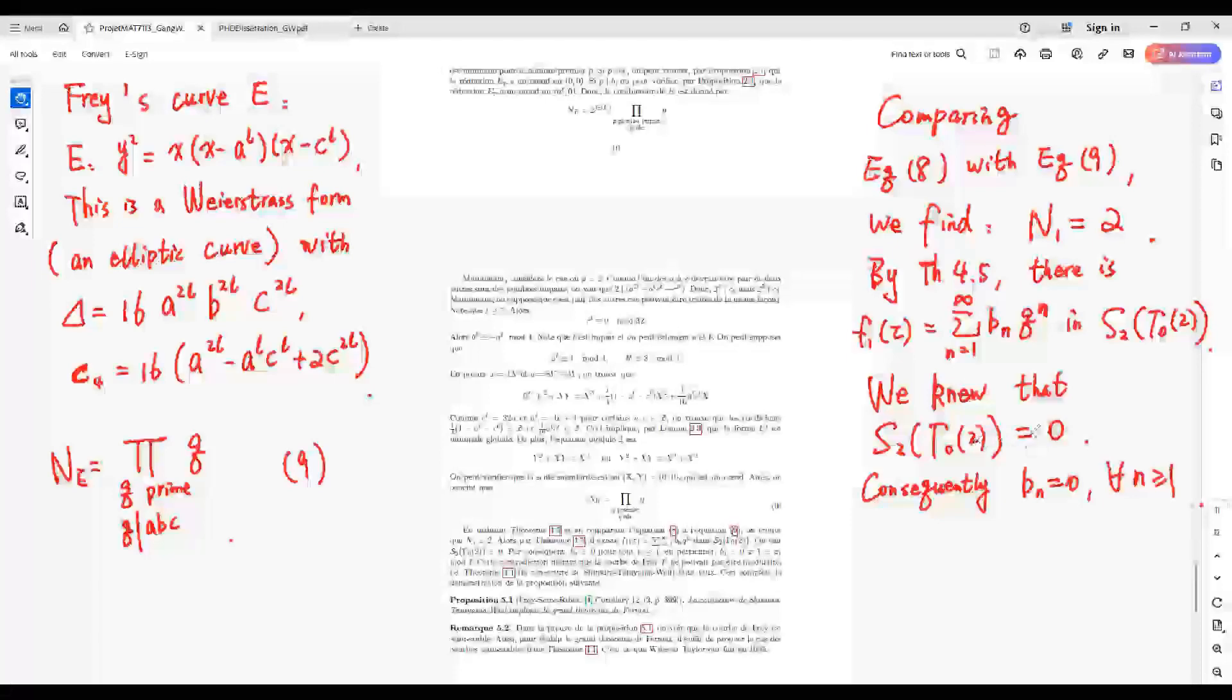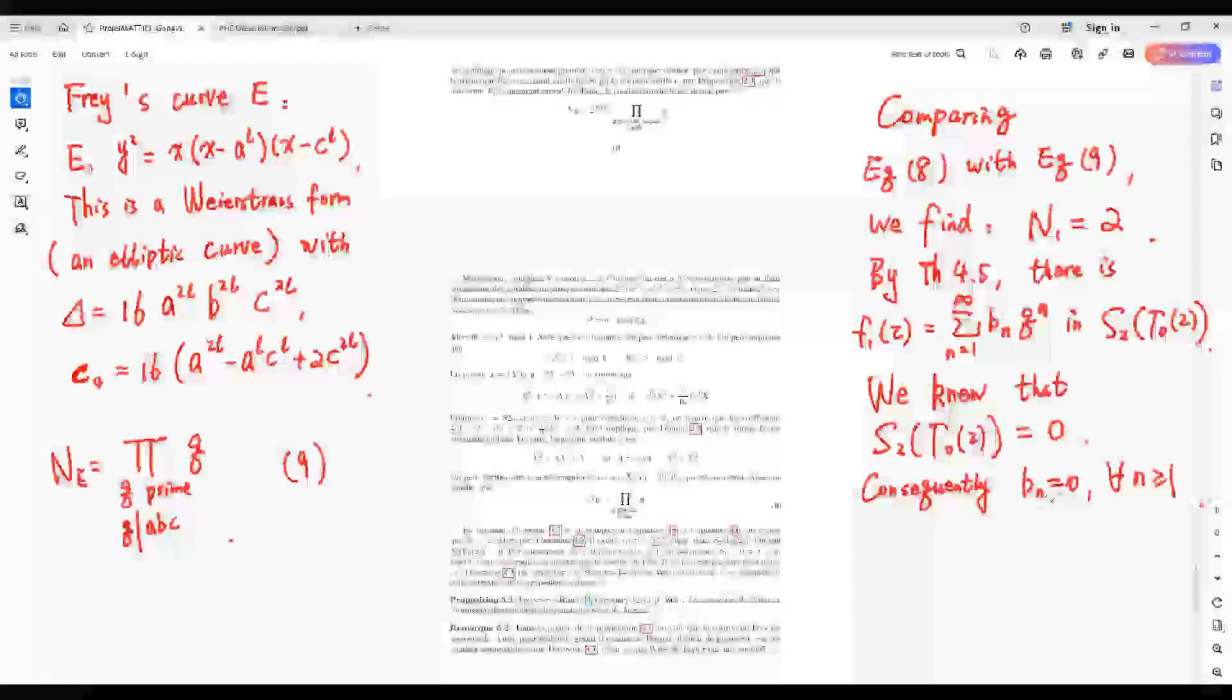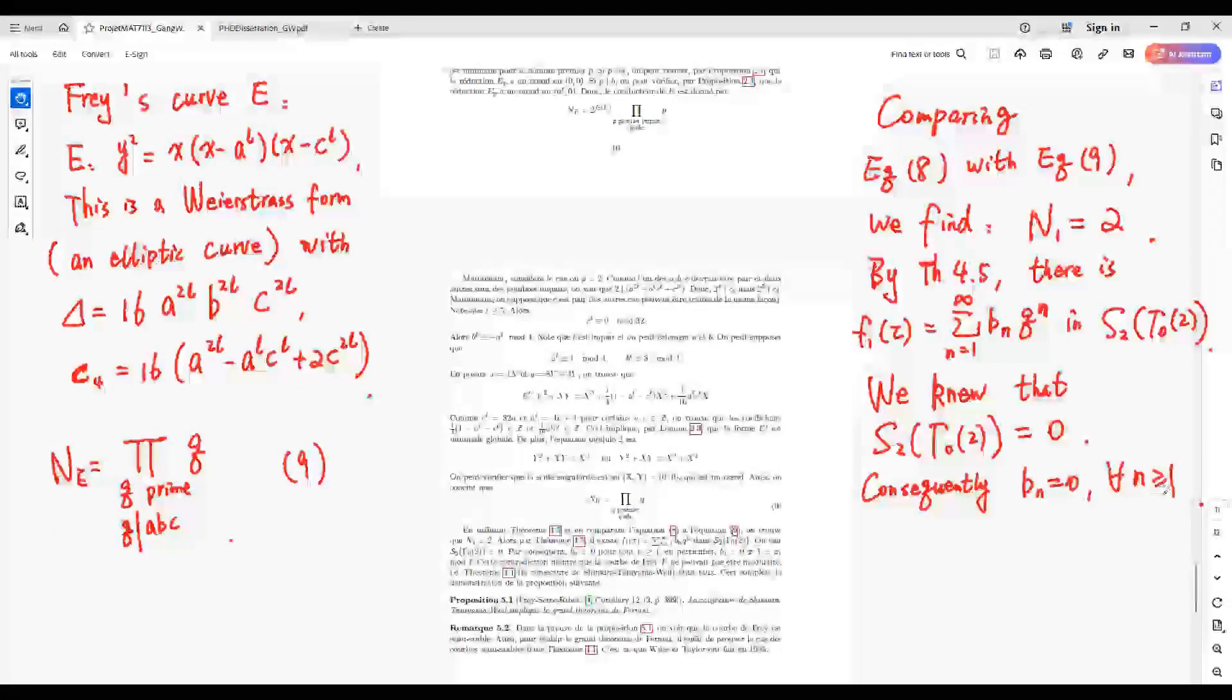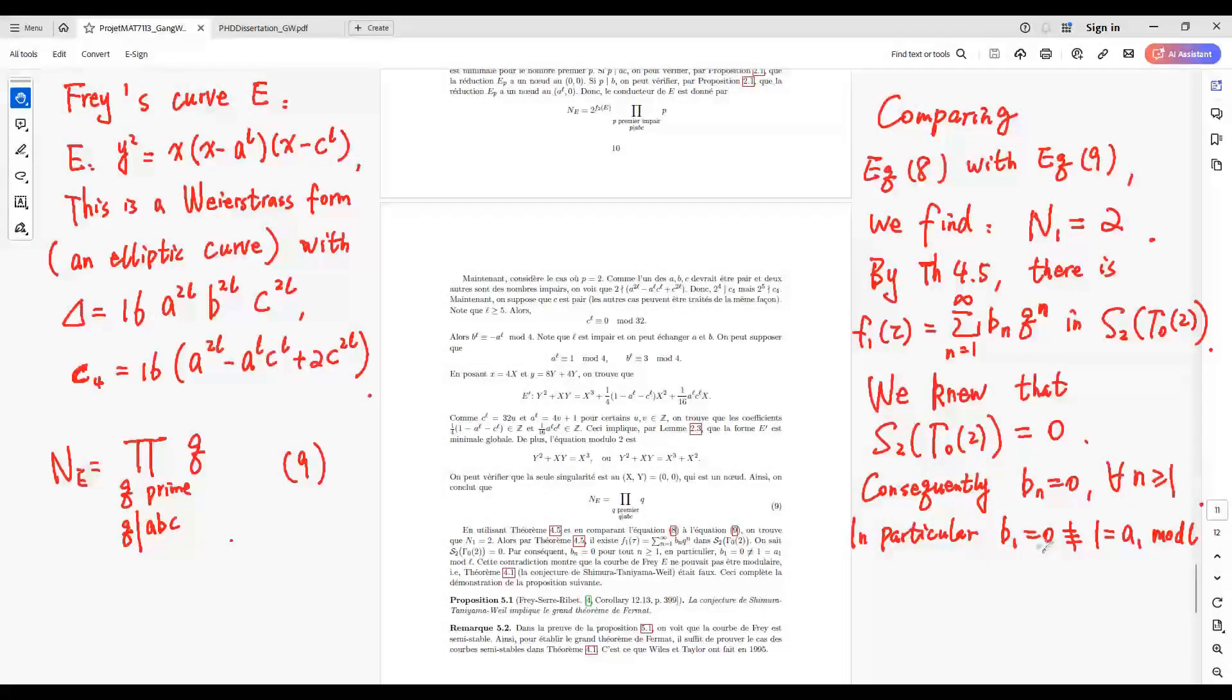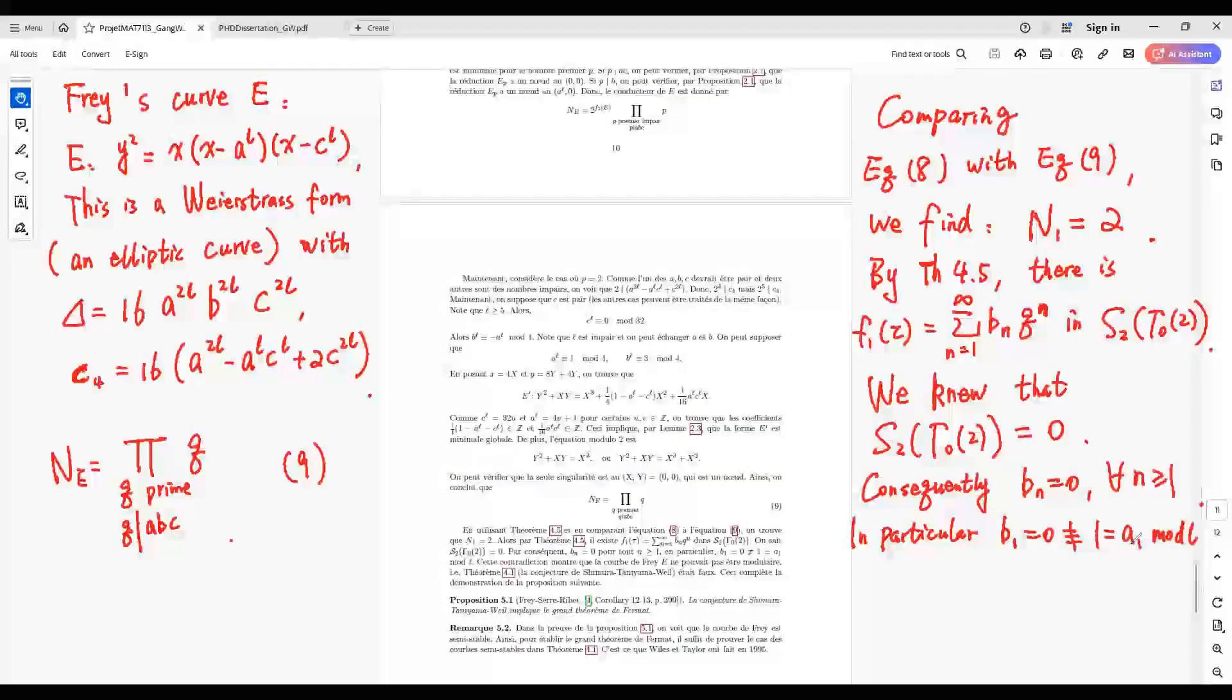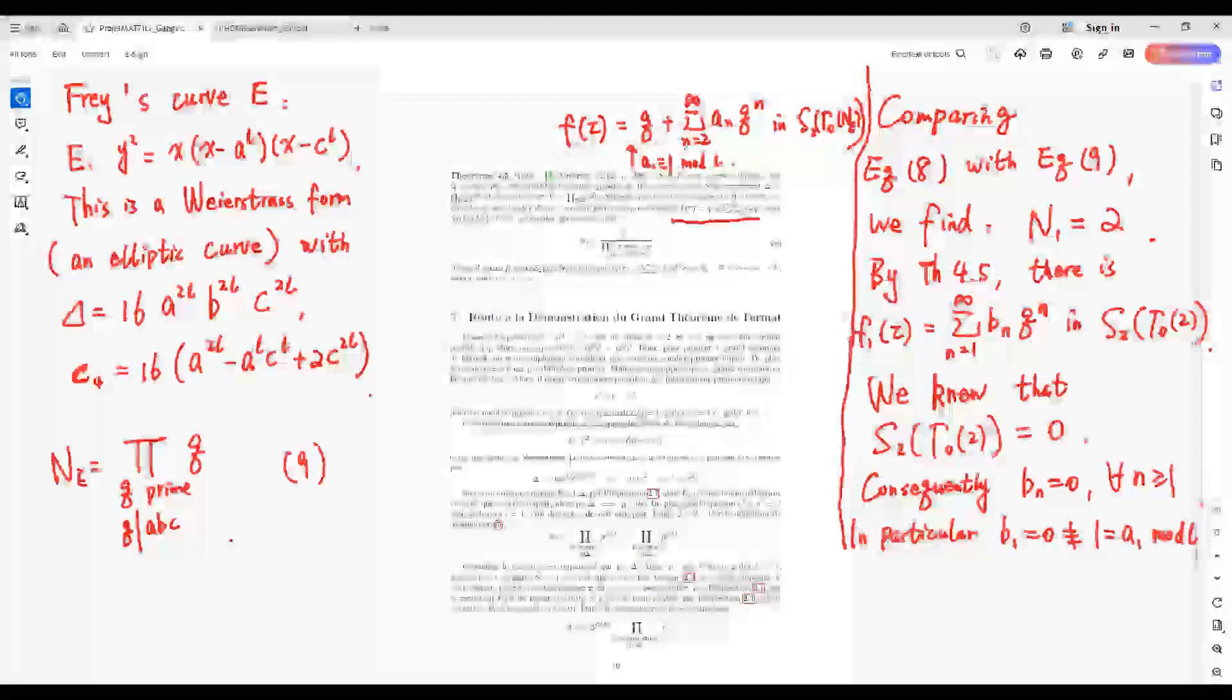We knew that S_2(Γ_0(2)) equals 0. Consequently, a_N equals 0 for any N greater than 0. In particular, a_1 equals 0 is not equal to L modulo L equals a_1, where a_1 is given in this cusp form.